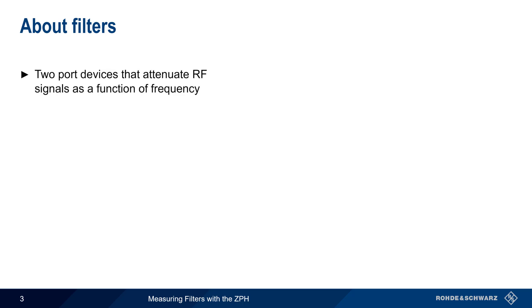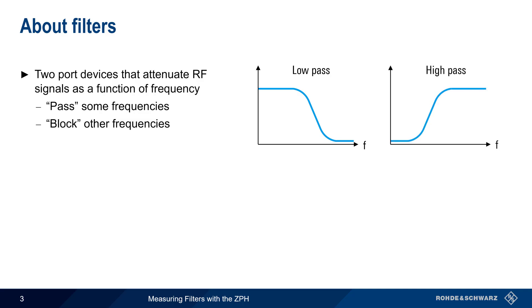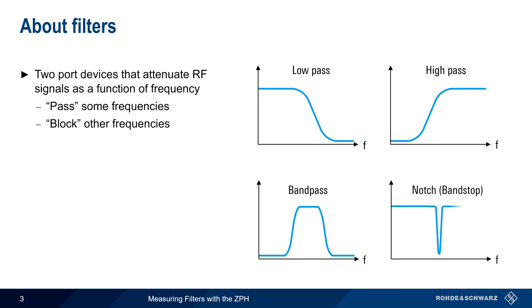Let's start with a brief review of filters. Filters are two-port devices that attenuate radiofrequency signals as a function of their frequency. Another simplified way of saying this is that filters pass some frequencies and block other frequencies. Filters are generally grouped into four categories: low-pass filters pass lower frequencies and block higher frequencies, high-pass filters do the opposite, a bandpass filter passes only signals within a certain frequency range or band, and a notch or band stop filter is used to block a usually narrow frequency range.